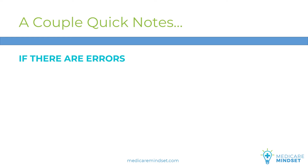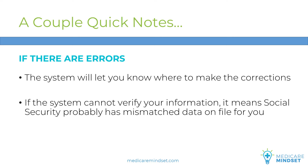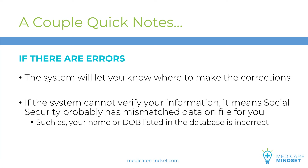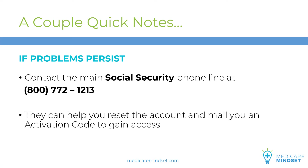If you encounter errors along the way, the system will alert you where to make corrections. This could happen during the login.gov account creation process or later when you're entering your contact information for the Social Security Administration. It's possible that no matter how accurate you think your information is, the system might not accept it — there may be mismatched data on file, like the wrong date of birth, a misspelled name, or something that doesn't match your credit file. Social Security verifies information through the credit reporting agencies. If you can't seem to get anywhere, contact Social Security at 800-772-1213. They can help you gain access by mailing you an activation code, which you would then use to proceed with account creation.